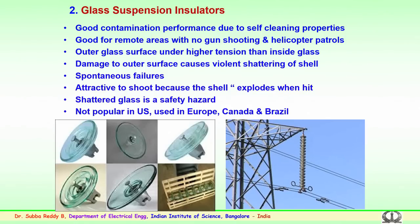In the glass insulator, the outer glass surface is normally under higher tension compared to the inside glass sheds. Any damage caused to the outer surface could cause violent shattering of the shell with spontaneous failures in the line. Glass insulators are very attractive to shoot because the shell explodes when hit, and some people take it as fun to shoot and shatter the insulators.